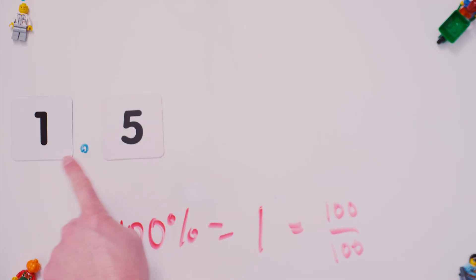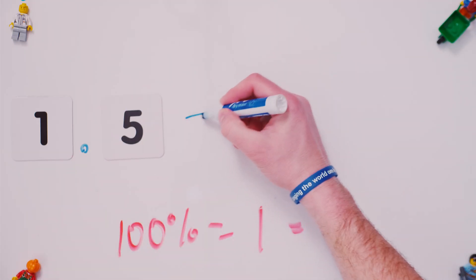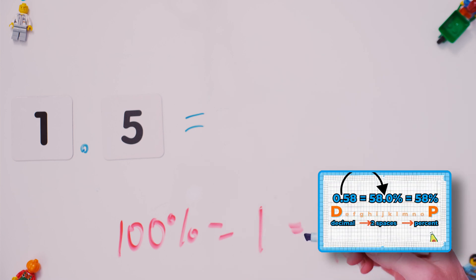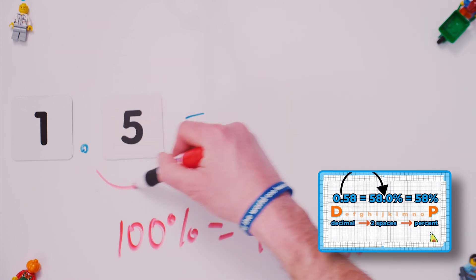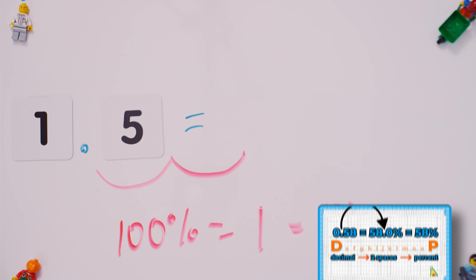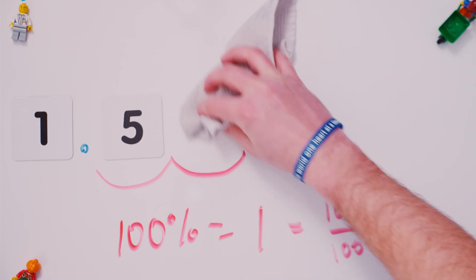We're making it a little harder. 1.5 is equal to, as a percent, you're just going to move the decimal over two spaces. Get your red marker and go one, two. And that's how you'll figure out what it is as a percent.